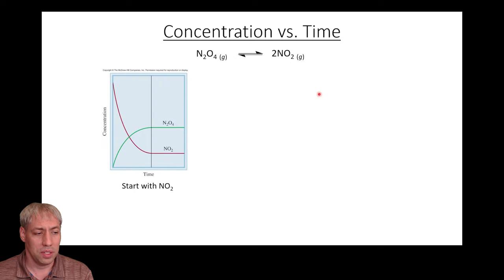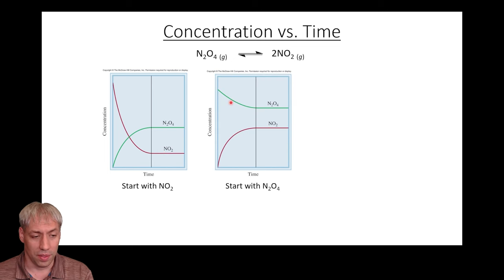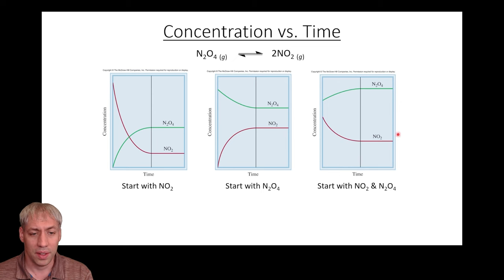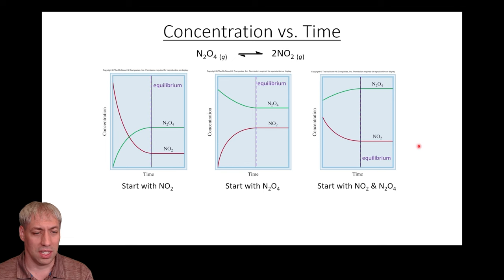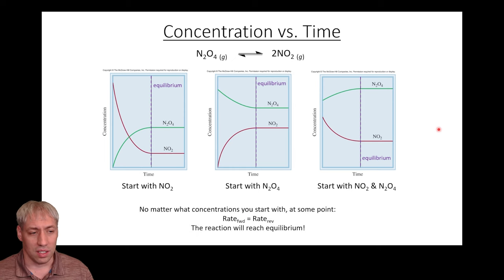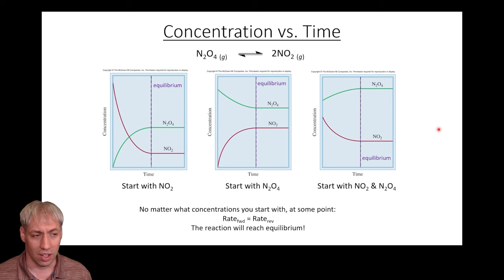Starting with pure NO₂, you eventually reach a point where NO₂ plateaus and N₂O₄ plateaus. Starting with N₂O₄, that goes away and NO₂ forms, but you also reach this plateau. Starting with a mixture of the two that isn't at equilibrium concentration, the rates of forward and reverse keep changing until they match. In all cases, N₂O₄ increases or decreases and NO₂ adjusts accordingly — no matter where you start, if the reaction is bidirectional and you give it enough time, it will reach a condition where the rate of forward equals the rate of reverse.